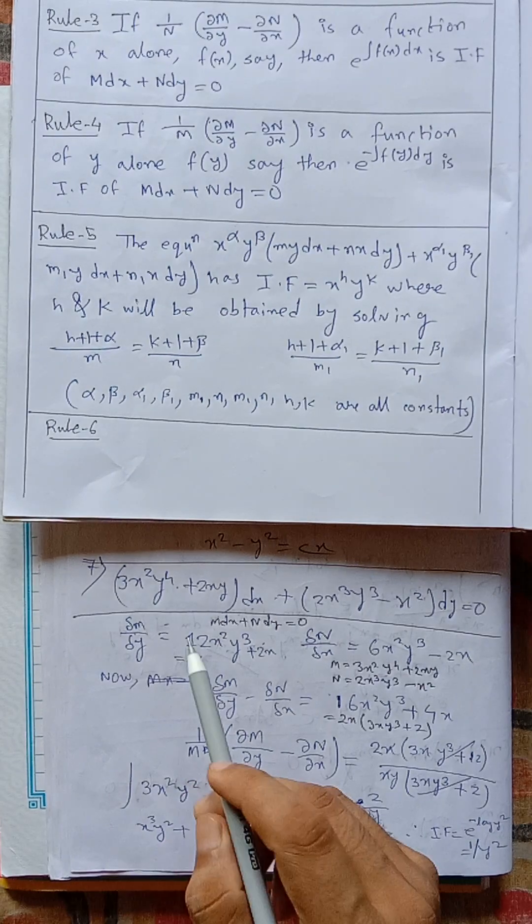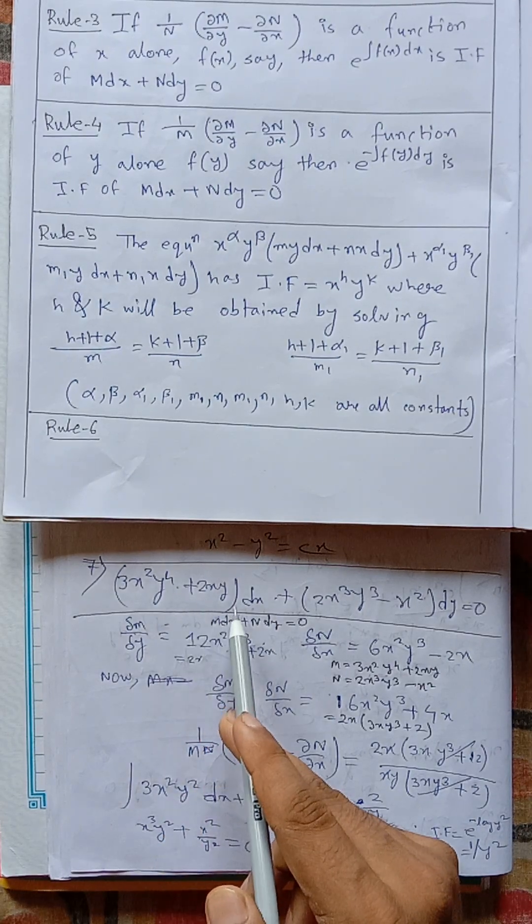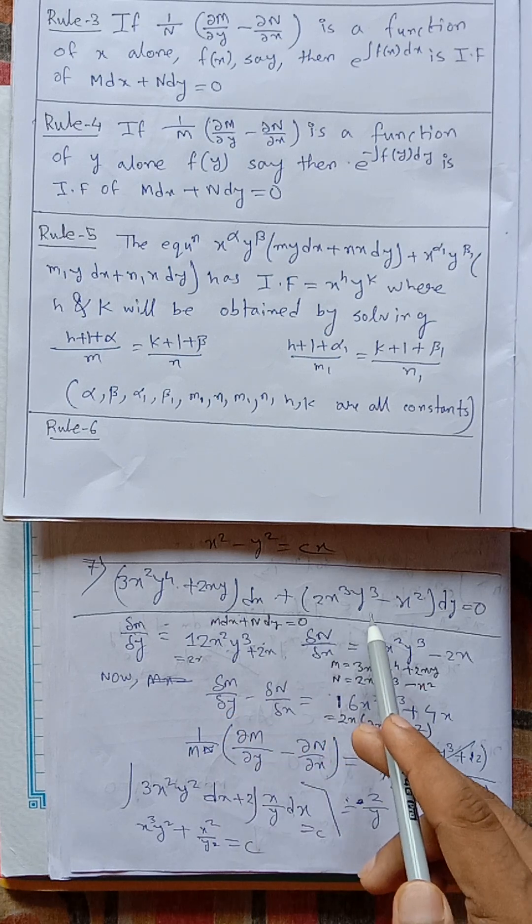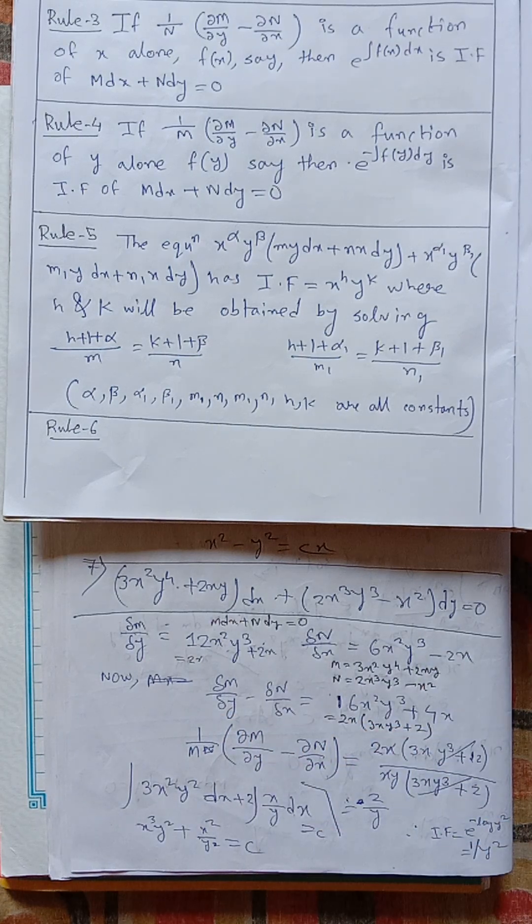Our question is 3x square y to the power 4 plus 2xy dx plus 2x cube y cube minus x square dy equal to 0.